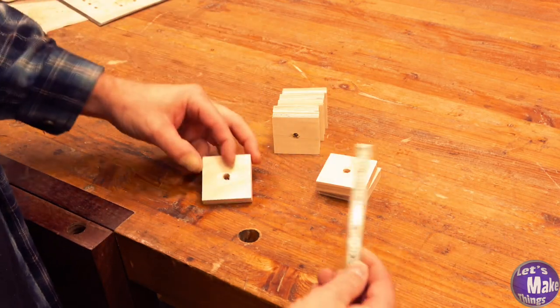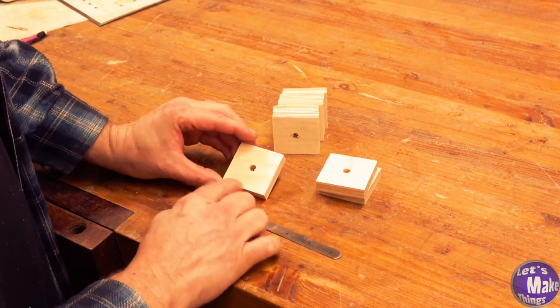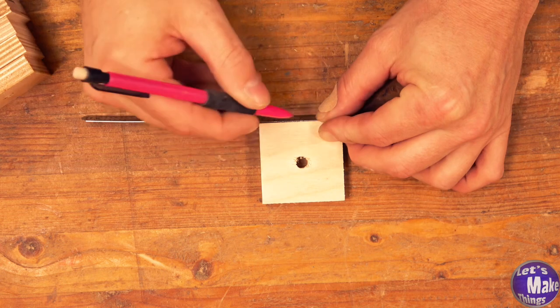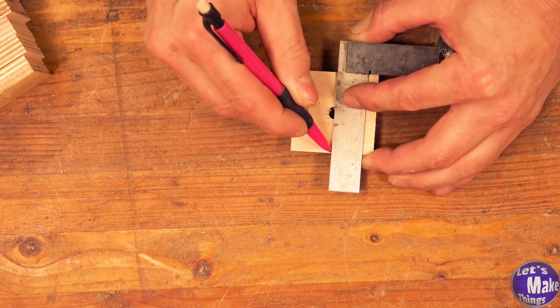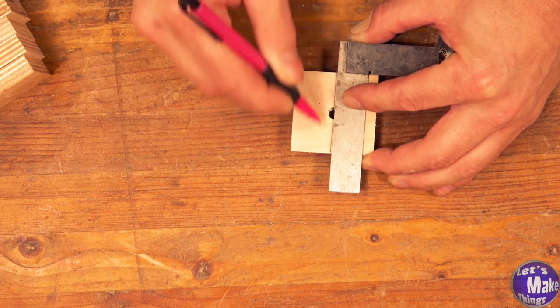I went ahead and drilled all eight holes for all the eight blocks. Now, we're going to take a ruler. We're going to find the center of one side. Because these are two inches by two inches, I'll find the center at one inch. Then, I'll use a square to draw a line across.